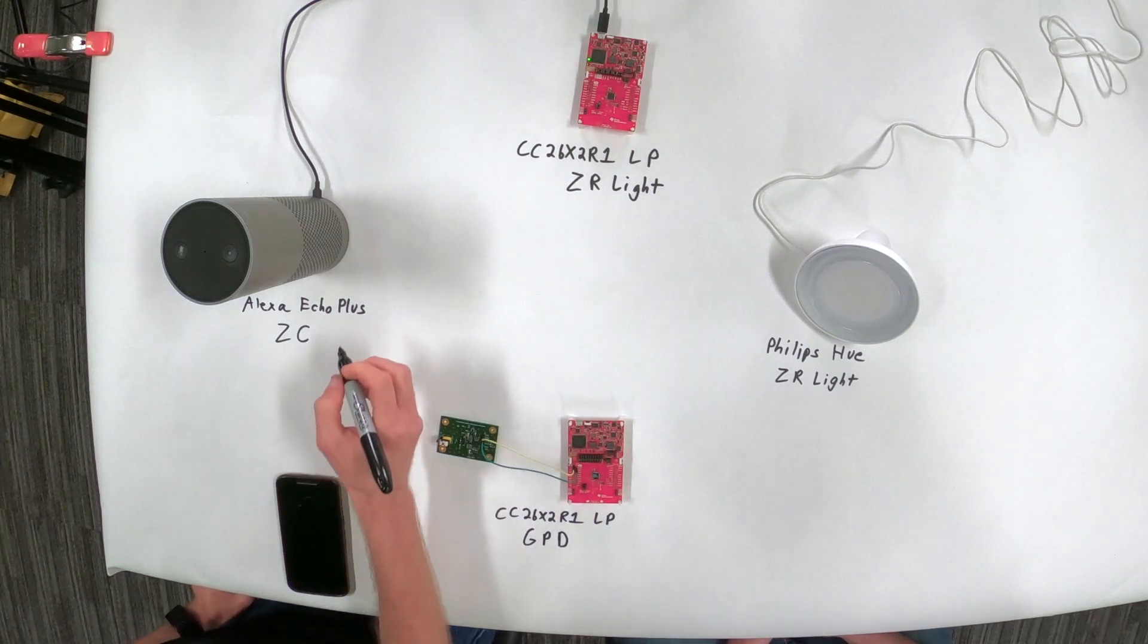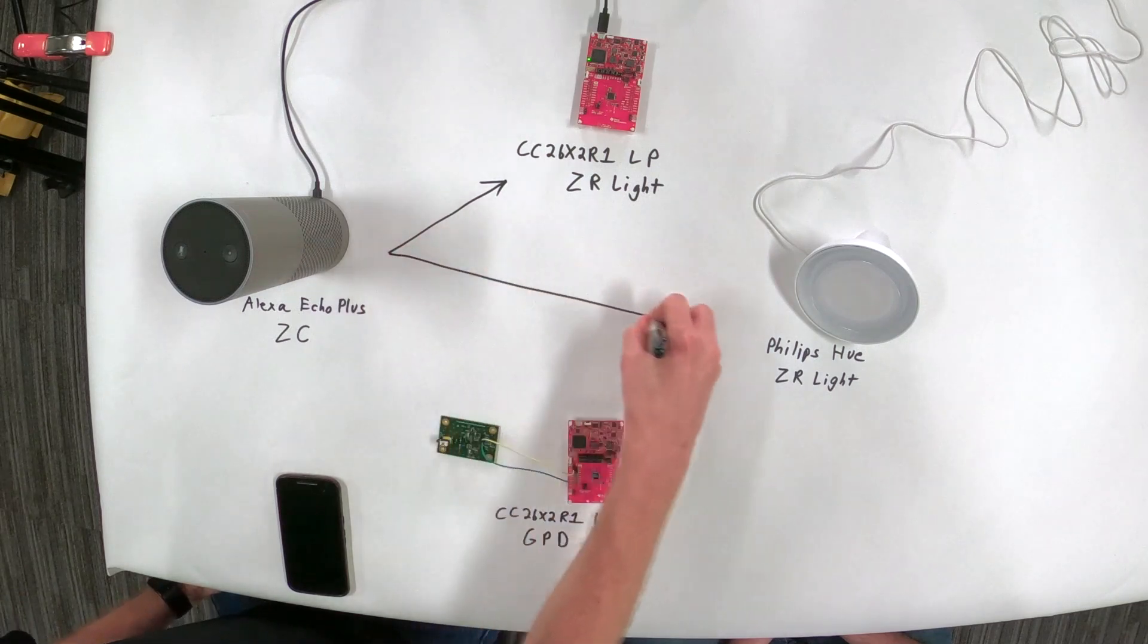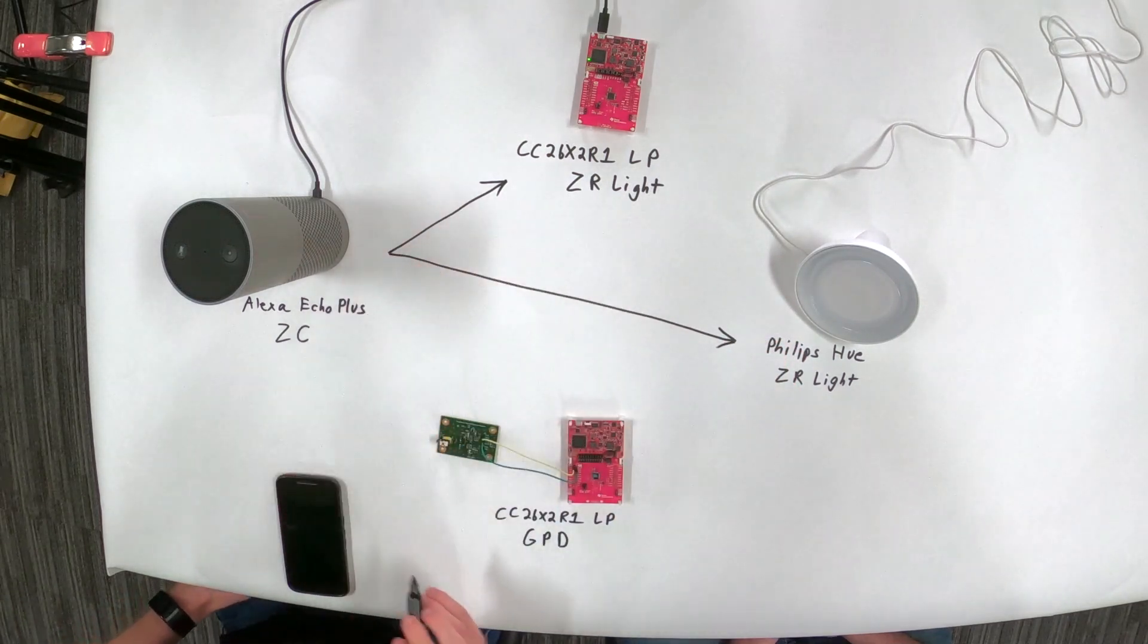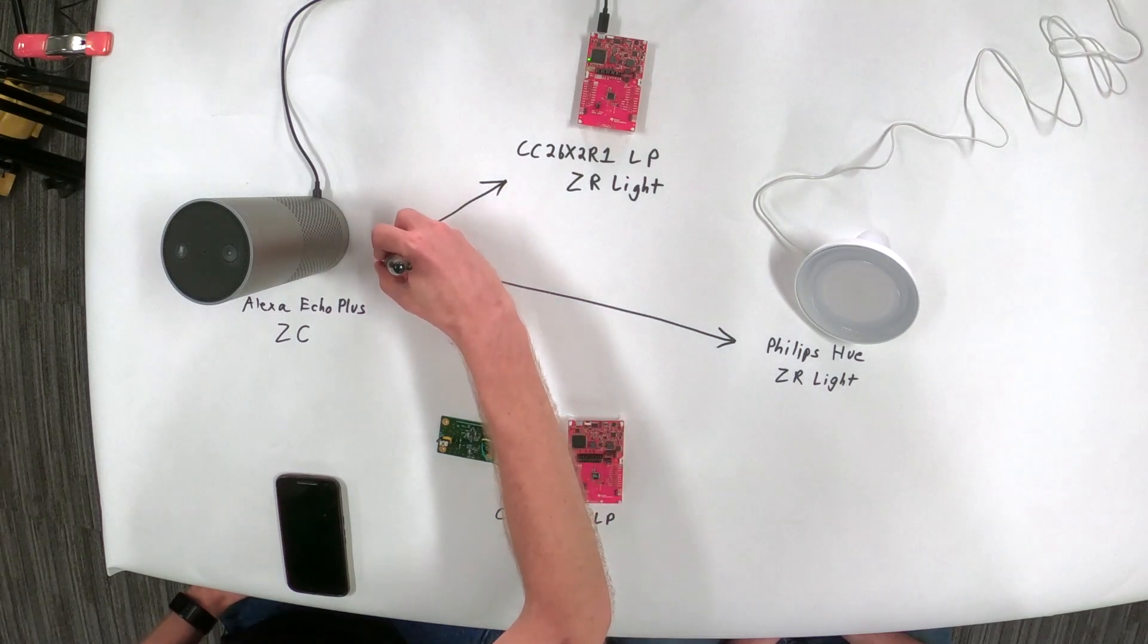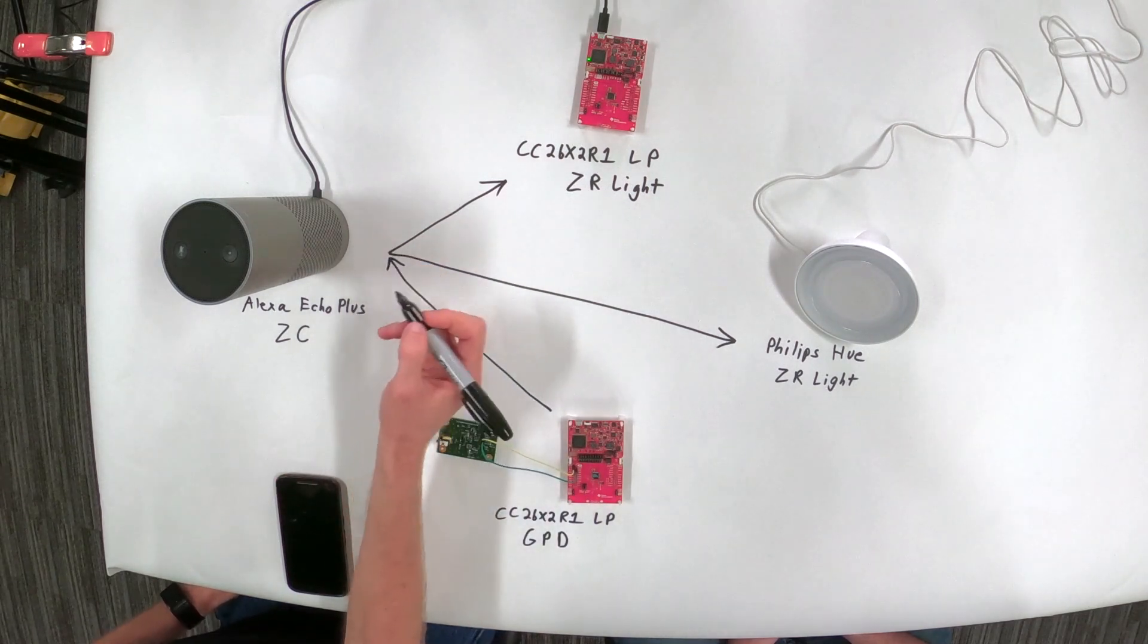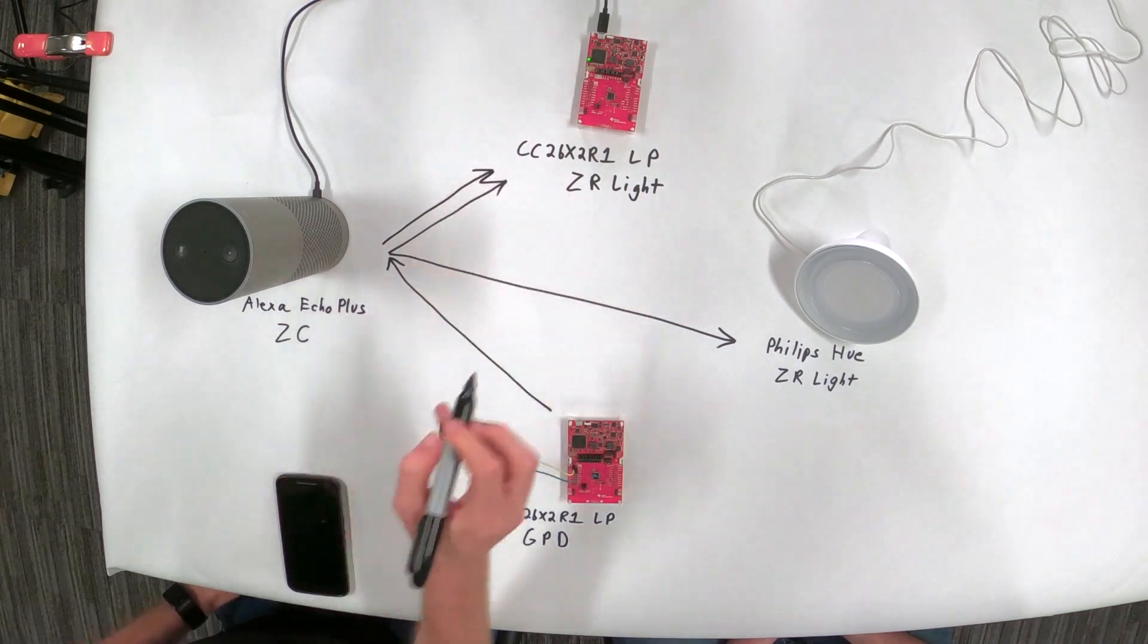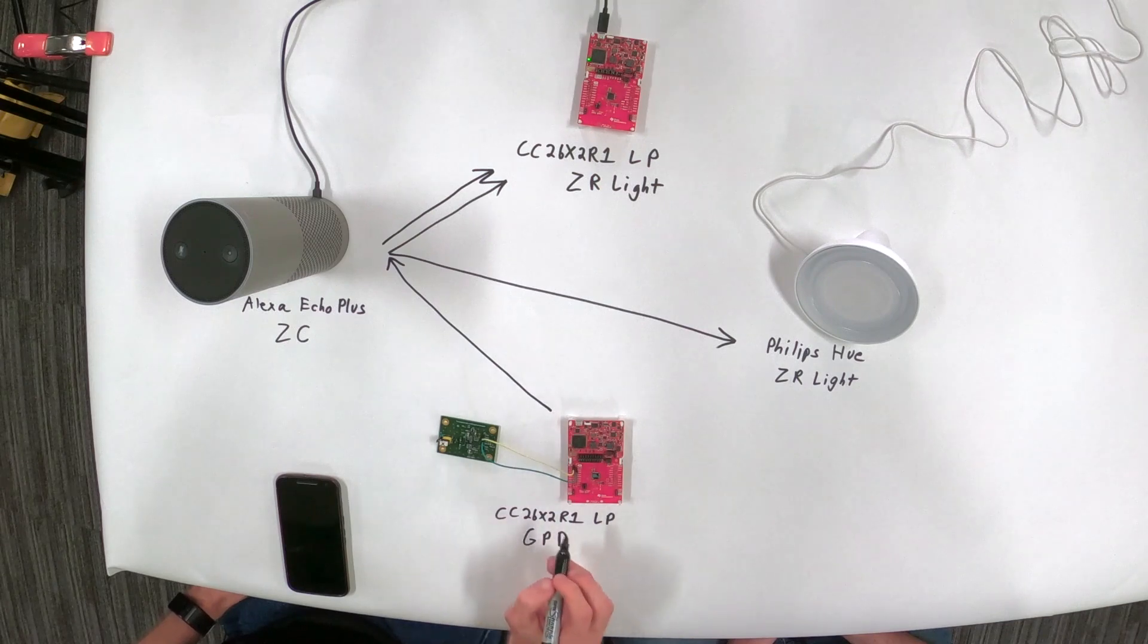And so basically the Echo Plus here is going to be able to send commands to either of these lights as shown above, but the green power device is going to be able to come over here and send packets to the Amazon Alexa Plus green power packets that are then going to be forwarded over to our ZR light and be able to control this light as well from our battery switch.